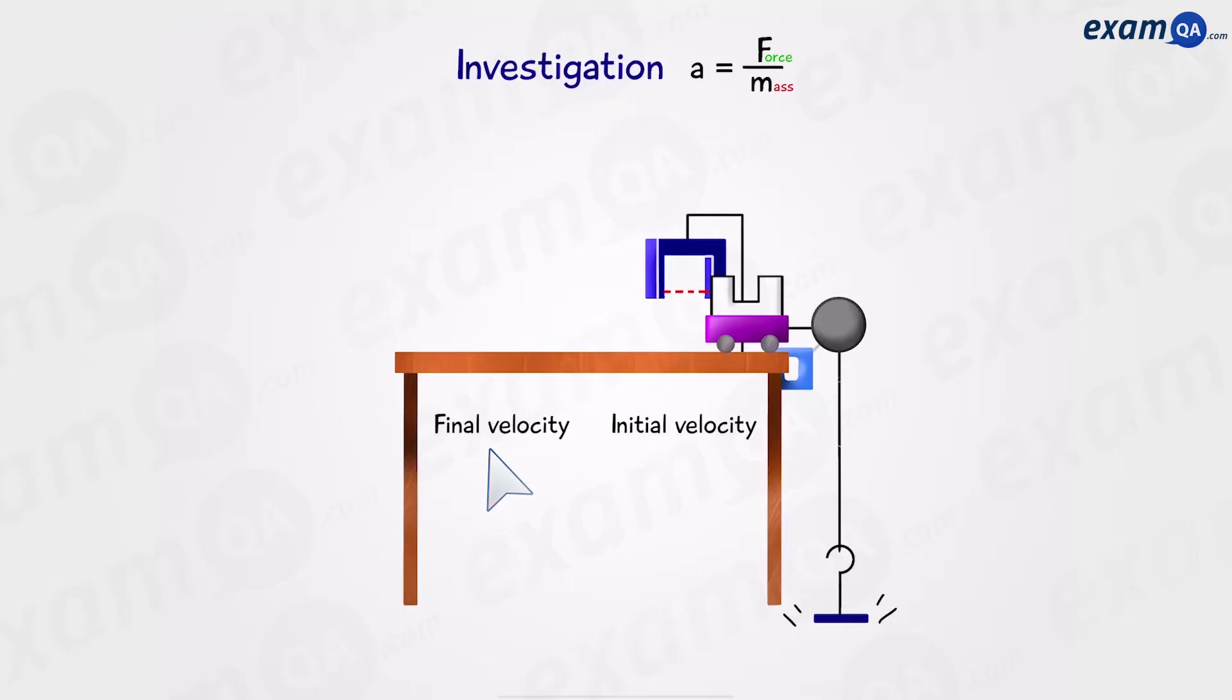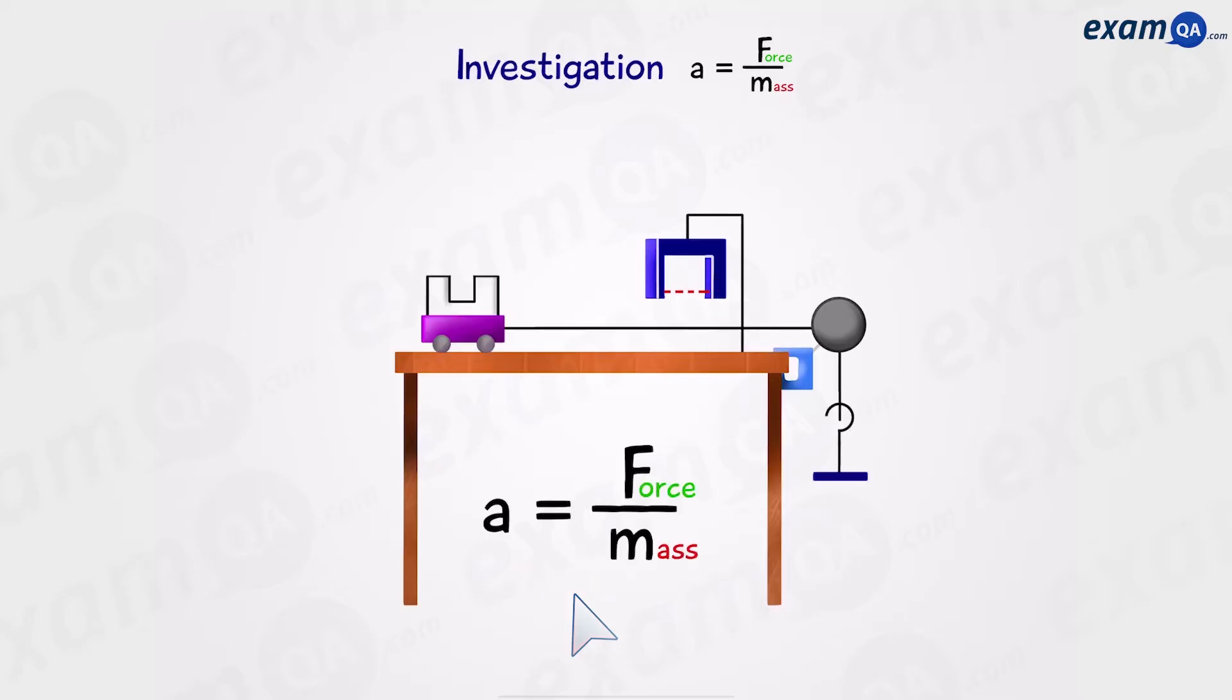Once the hanging masses hit the ground, the trolley will no longer accelerate. Then the light gate will do some fancy calculations, giving us acceleration. Don't worry about explaining the equation or what happens inside the light gate for now. So how do we use this setup to prove that force and mass can affect acceleration?